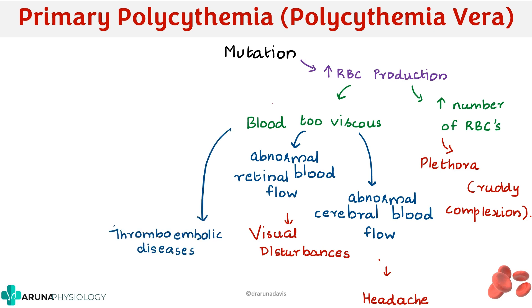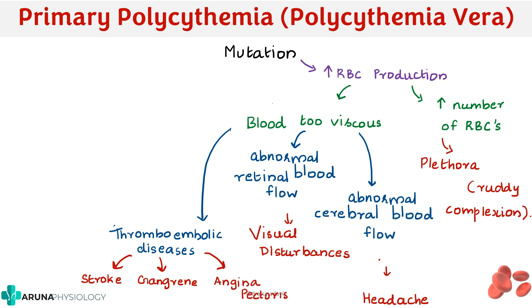Because the blood is too viscous, thromboembolic diseases can occur. Since the flow is very slow, emboli can form, dislodge, and produce problems anywhere in the body. This can lead to a stroke when an embolus reaches the CNS or brain. If it reaches other end organs, it can cause gangrene. If it blocks the coronary vessels of the heart, it can cause angina pectoris.